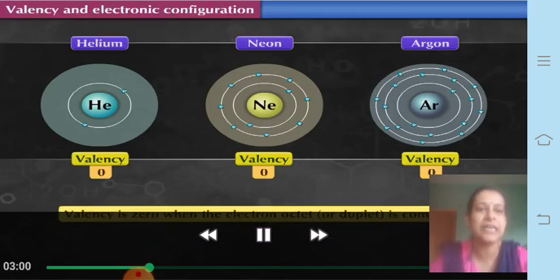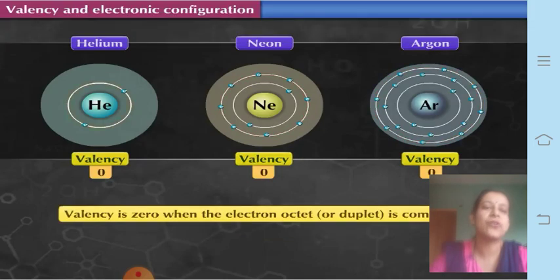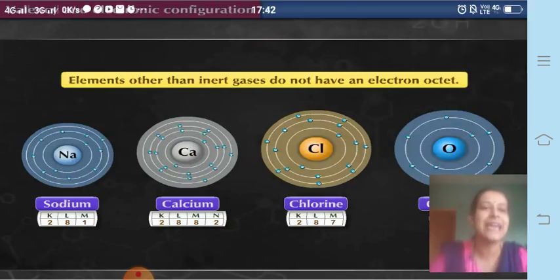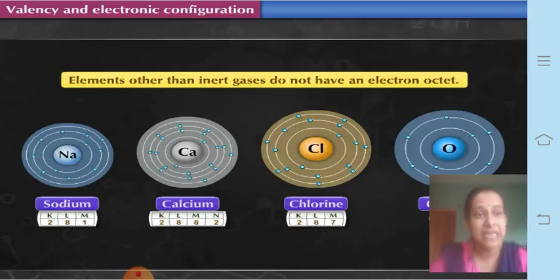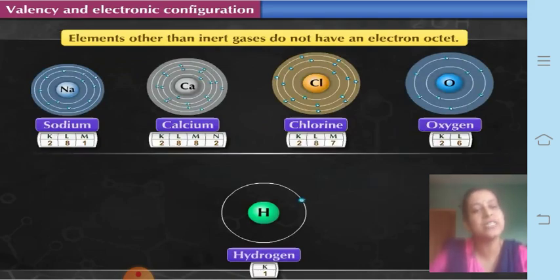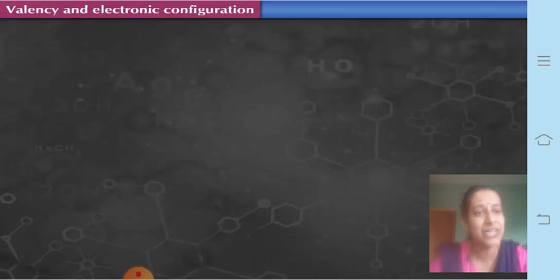Let us proceed further. Valency is zero when the electron octet or duplet is complete. But most elements other than inert gases do not have a complete electron octet — their valence shell is incomplete. In the case of hydrogen, the electron duplet is incomplete because it has only one electron, accommodated in the K shell, and it requires one more electron to complete its duplet.